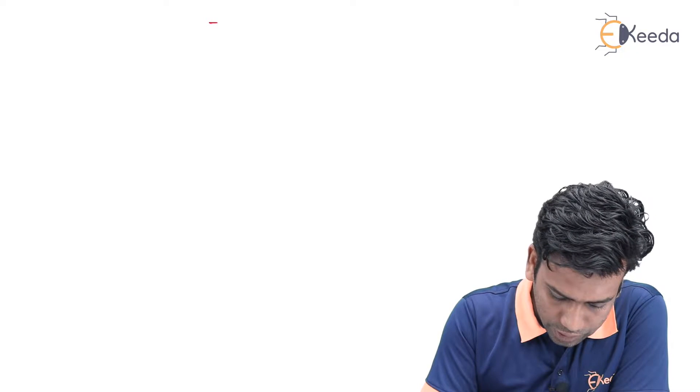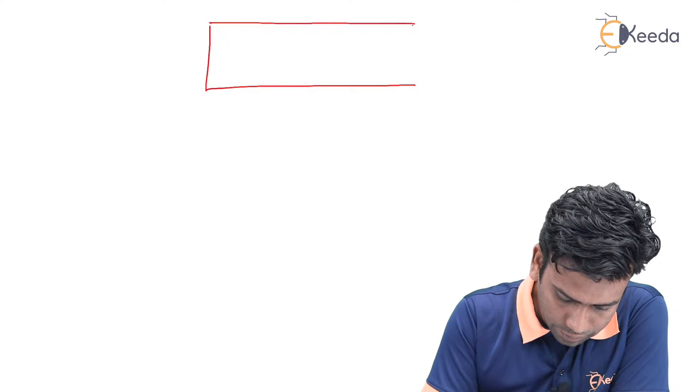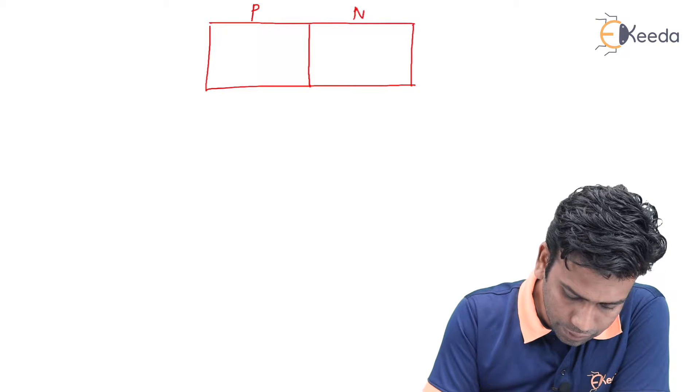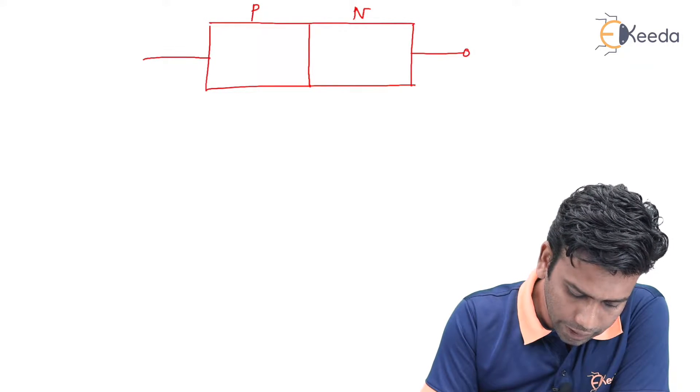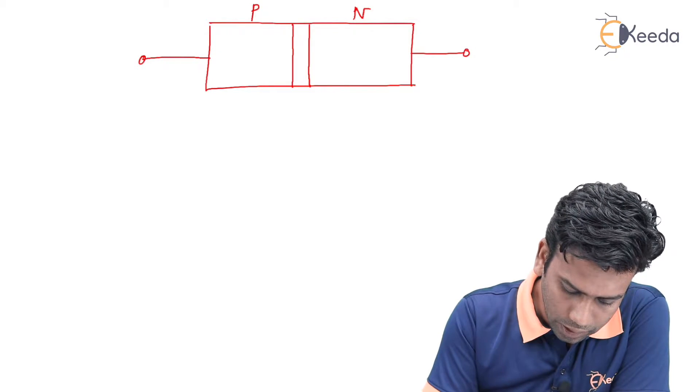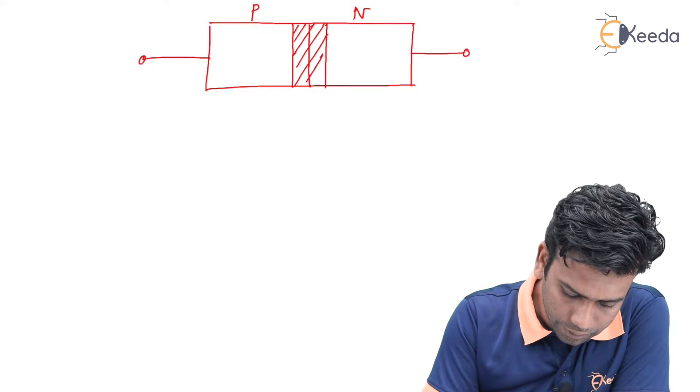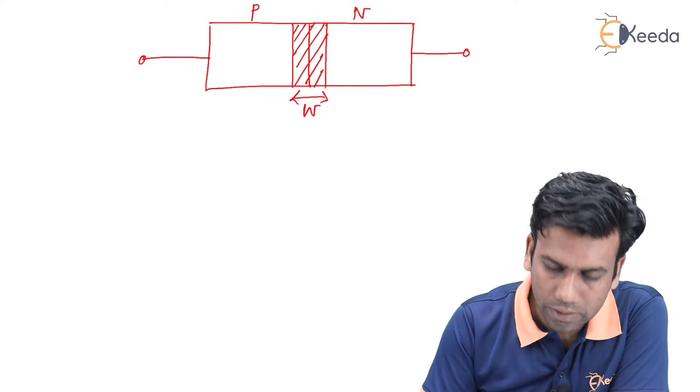Let us look at the P-N junction block diagram of the diode. If it is the P-N junction diode, then this is the P-side, this will be the N-side, and these are the metal contacts of the diode. In between there will be a depletion region inside the diode. Let the width of the depletion region be W.